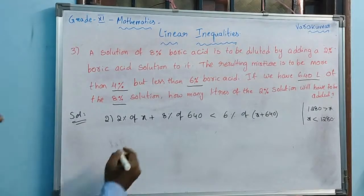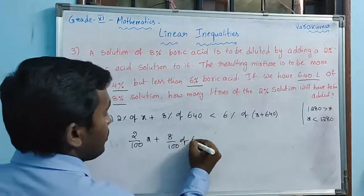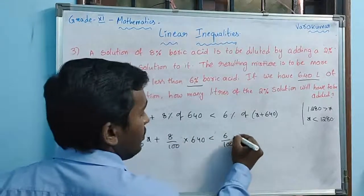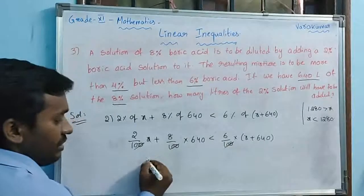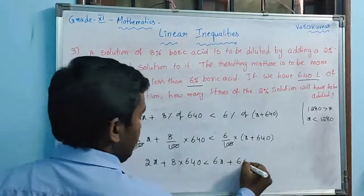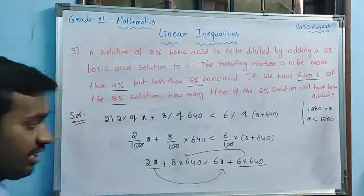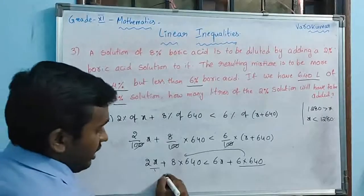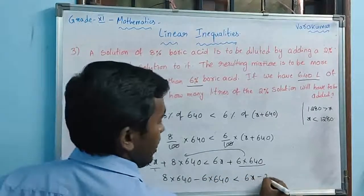Condition two: 2/100 × x plus 8/100 × 640 less than 6/100 × (x + 640). Multiplying both sides by 100: 2x + 8×640 less than 6x + 6×640. Rearranging: 8×640 minus 6×640 less than 6x minus 2x.